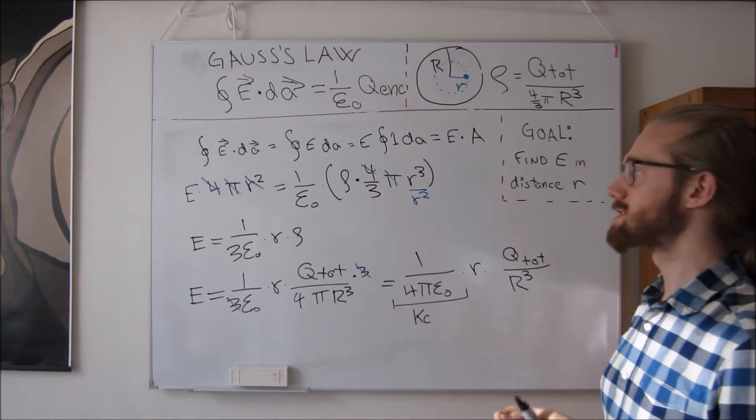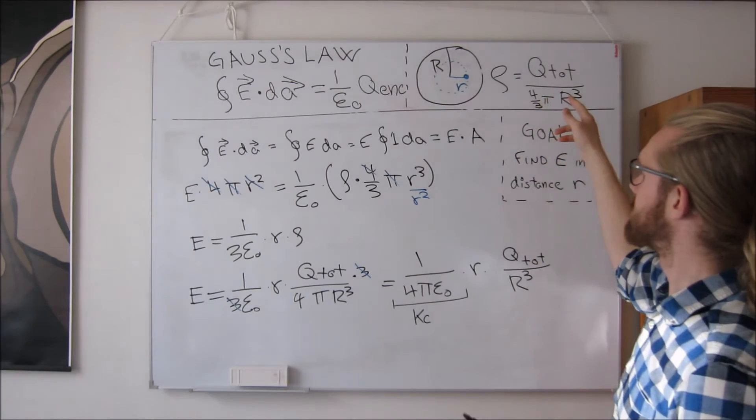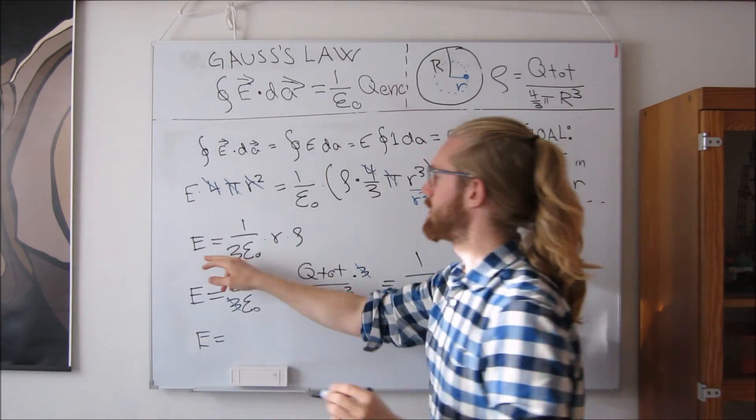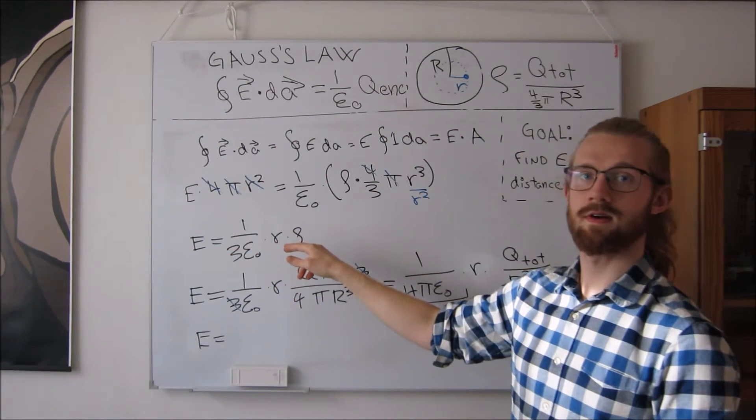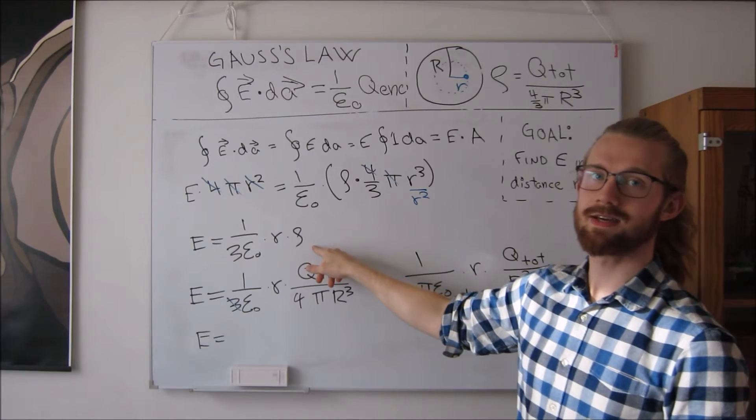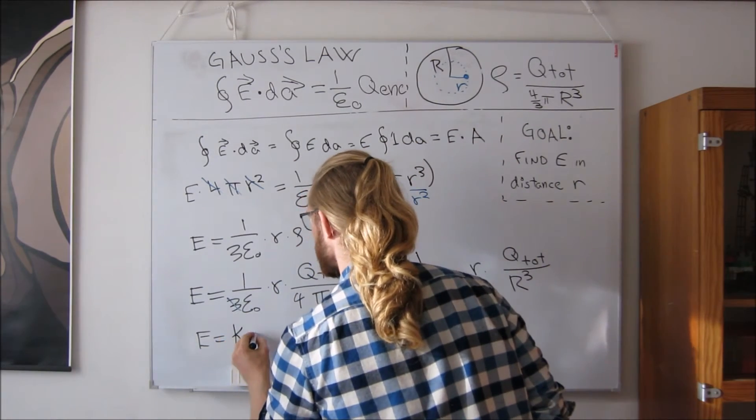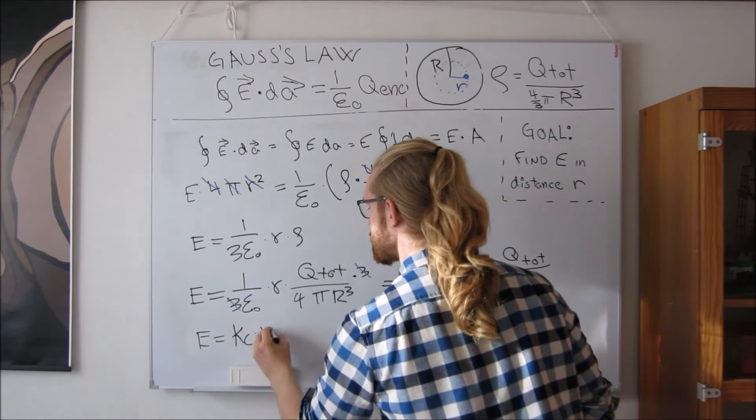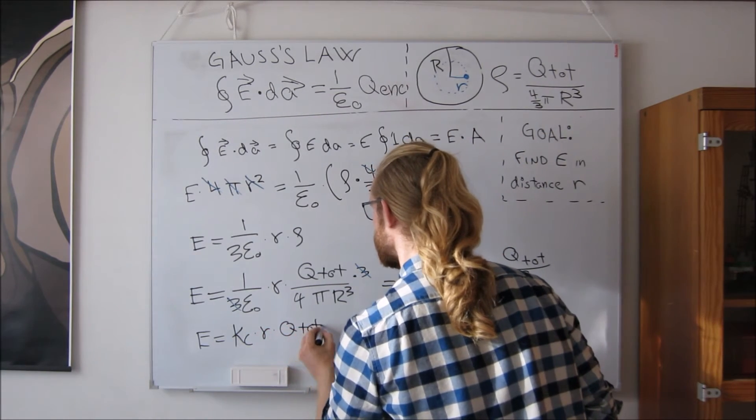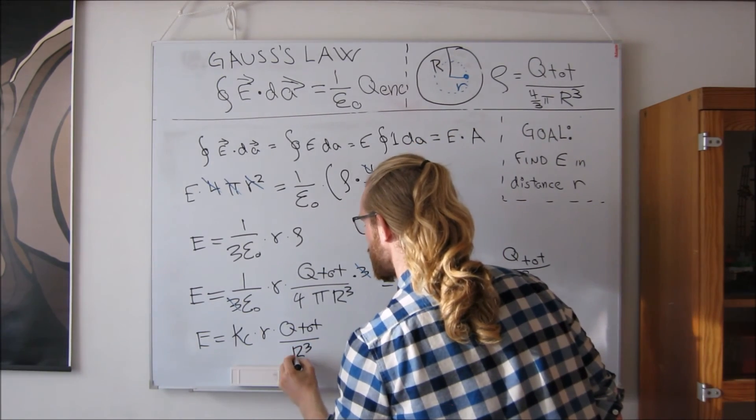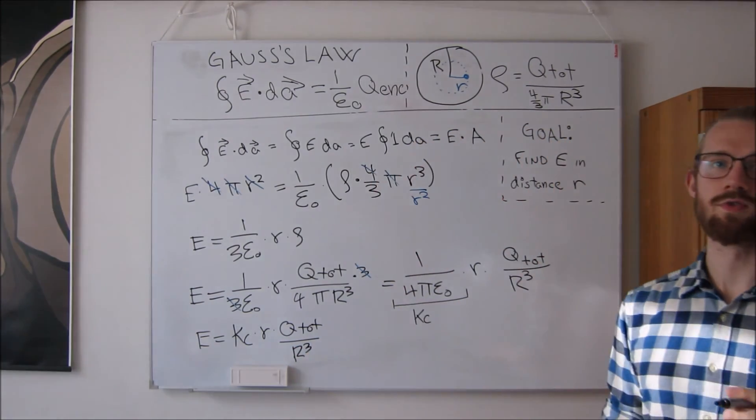So the electric field strength at the distance r is given by this expression with the charge density and the distance, or this expression: Coulomb's constant times the distance, and then the total charge of the sphere divided by the radius of the sphere cubed. And that is what we wanted to find.